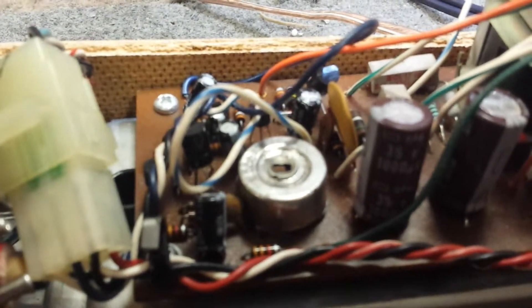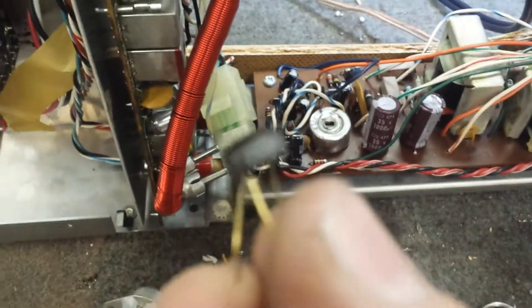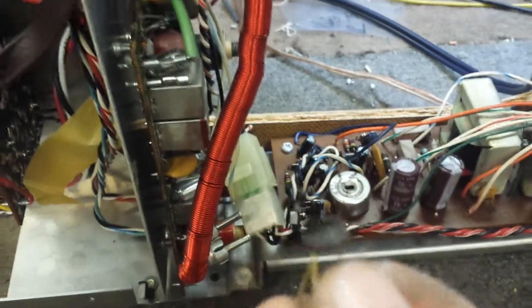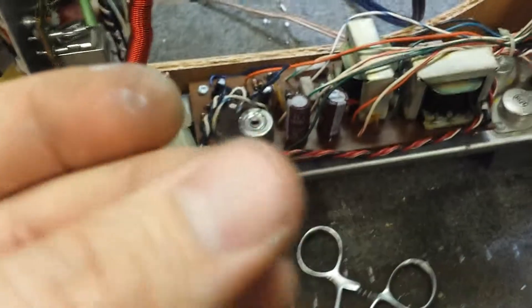We also did a recap of the machine and we've got newer components in here. For the Class A driver, we've gone from the original, which was the little space helmet type 2N 3645, to a 2SB560. And the input device, which was a KLH labeled part number 704, I've gone to a low noise 2SC 2240, which helps.